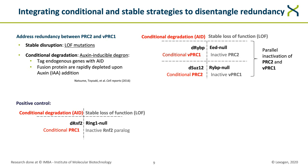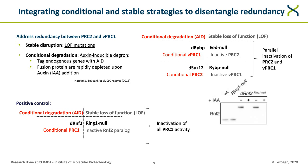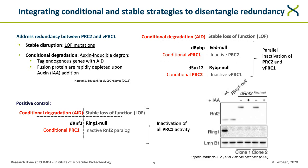As a positive control, we tagged RNF2 with AID in the background of its paralog Ring1 loss-of-function mutation, so auxin would inactivate all PRC1 complexes. The system works very well, as shown by Western blot for RNF2 protein: the AID-RNF2 bands completely disappear upon auxin treatment. The absence of Ring1 protein is confirmed in all cell lines except wild type, and lamin B serves as a loading control. We generated two clones per cell line to avoid clonal effects.